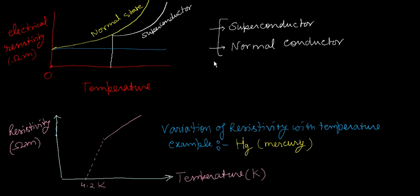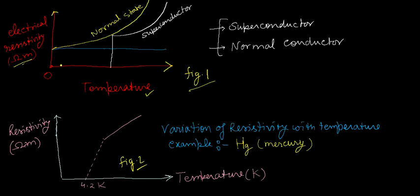Here I have shown these phenomena with the help of pictures — there are two figures. On the x-axis I have considered temperature, and on the y-axis this is the electrical resistivity in ohm-meters. There are two states: one for the normal conductor and one for the superconductor. The yellow color line is for the superconductor.